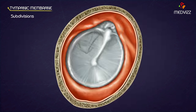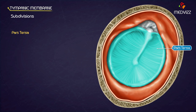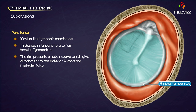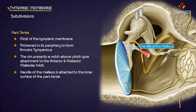Subdivisions. The tympanic membrane is divided into two parts: pars tensa and pars flaccida. Pars tensa forms most of the tympanic membrane. It is thickened in its periphery to form a fibrocartilaginous rim called the annulus tympanicus, which presents a notch above. From the margins of the notch, the anterior and posterior malleolar folds extend to gain attachment to the lateral process of the malleus. The handle of the malleus is firmly attached to the inner surface of the pars tensa.